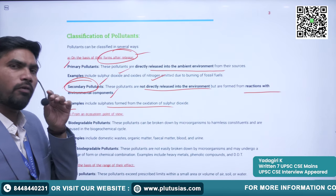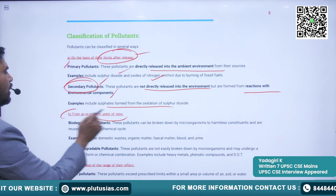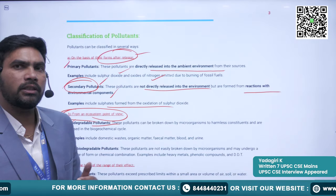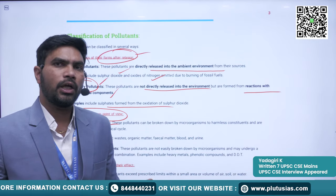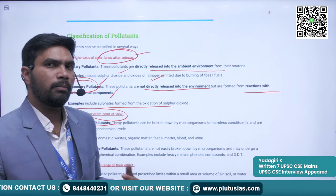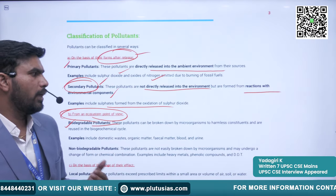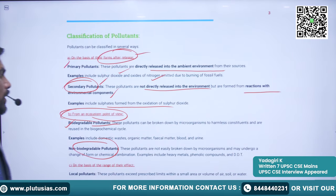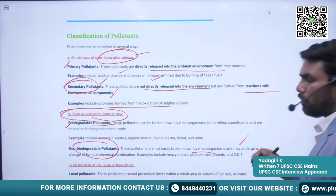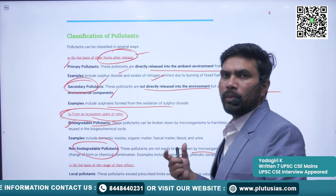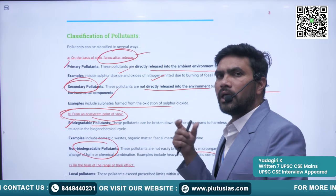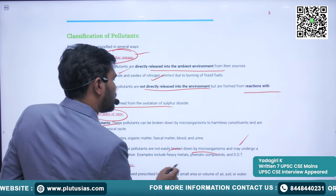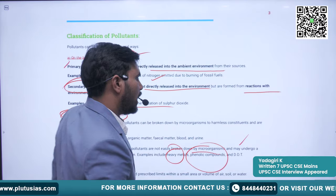From the ecosystem point of view: biodegradable pollutants are degraded into smaller elements by microorganisms over time, becoming harmless. Non-biodegradable pollutants are not easily broken down by microorganisms and remain for a long period of time. Examples of non-biodegradable pollutants are heavy metals, phenolic compounds, and DDT.